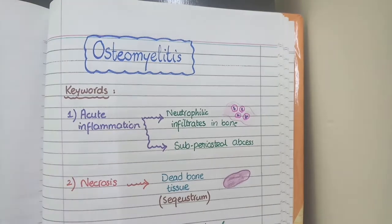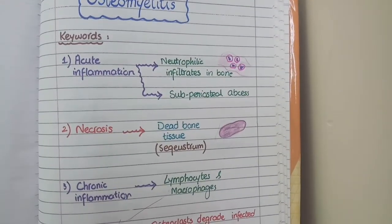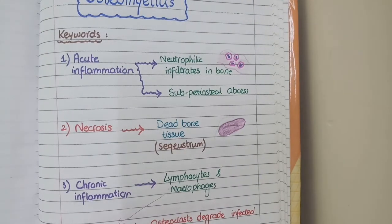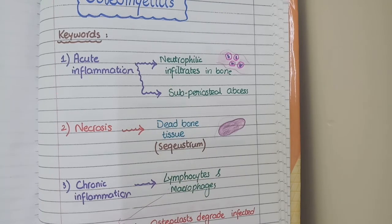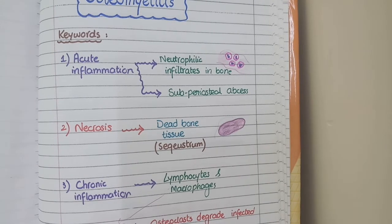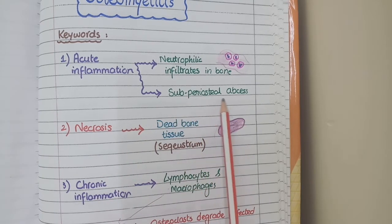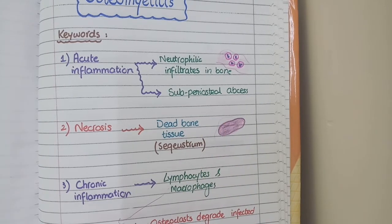In the morphology of acute osteomyelitis there are four main features that follow a sequence. Firstly, whenever there is an acute infection you will see acute inflammatory cells — that are neutrophils — and you can see here in this bone there is neutrophilic infiltration. Sometimes the infectious bacteria and the defending neutrophils also spread to the subperiosteal regions of the bone, resulting in pus in the subperiosteal region, which is called a periosteal or subperiosteal abscess.